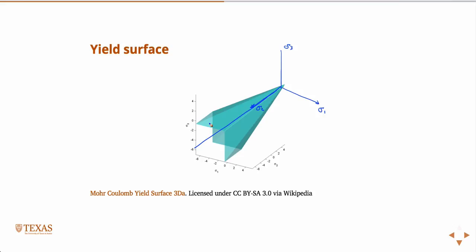It's like a pyramid, but it's got six sides. It's got six sides and it's sort of this pyramidal type shape, and the line that it's centered on — it's symmetric — and that line is sigma 1 equals sigma 2 equals sigma 3, and this is called the hydrostat.